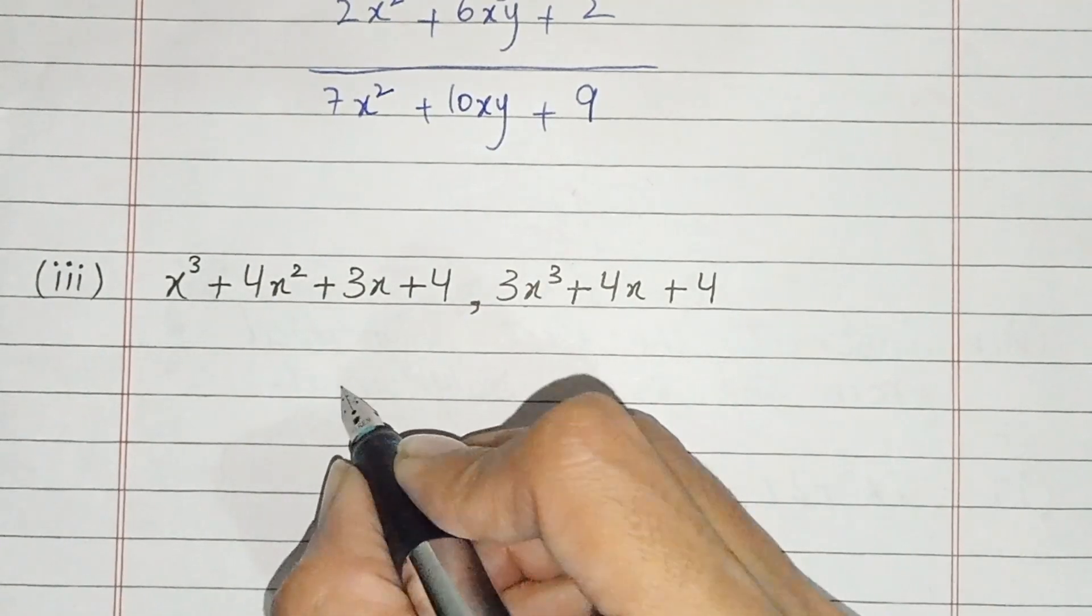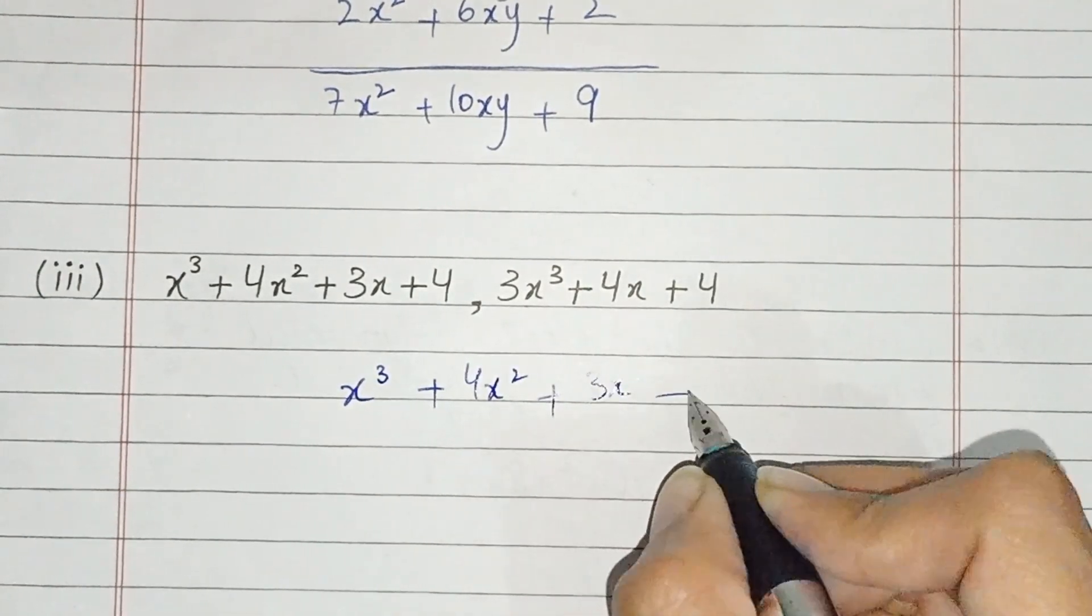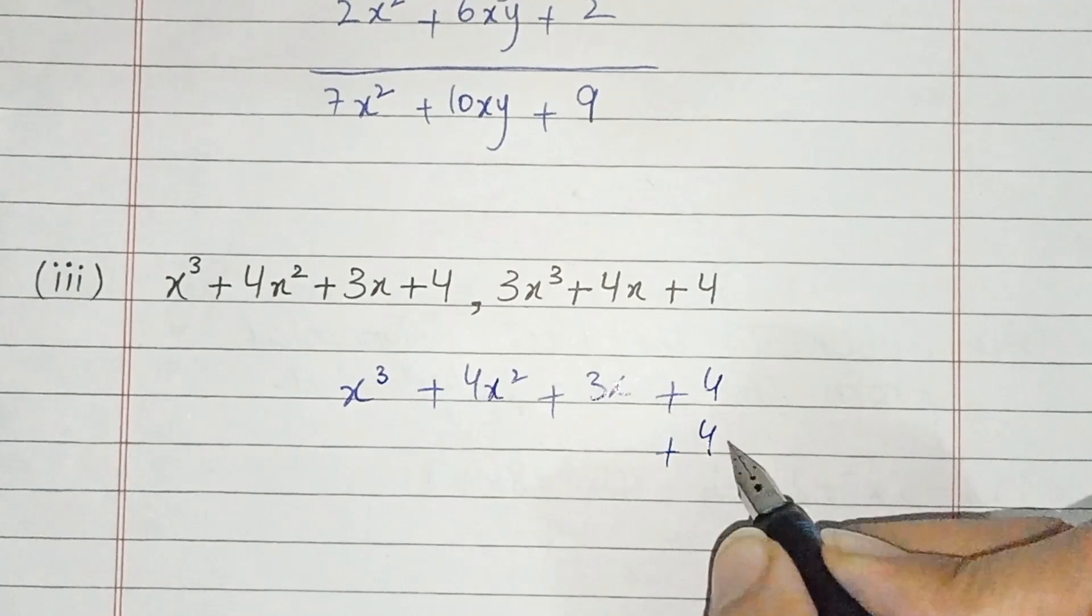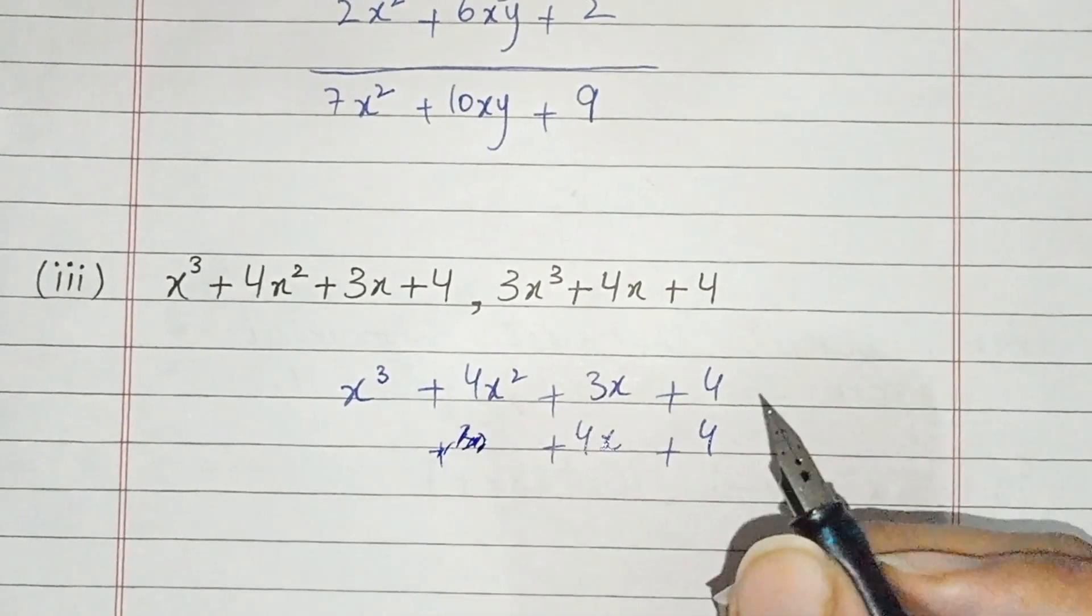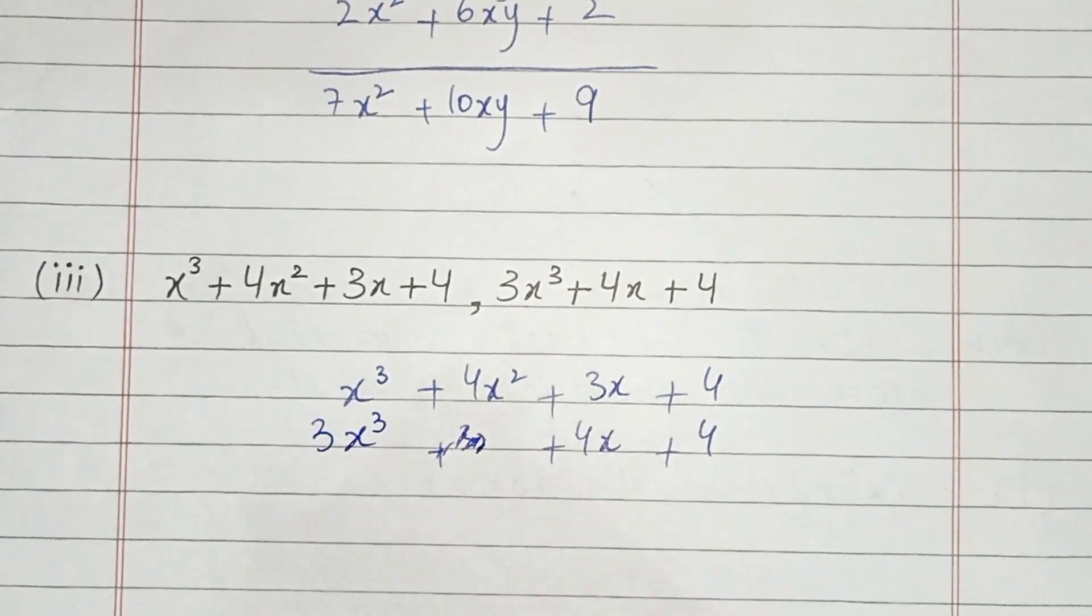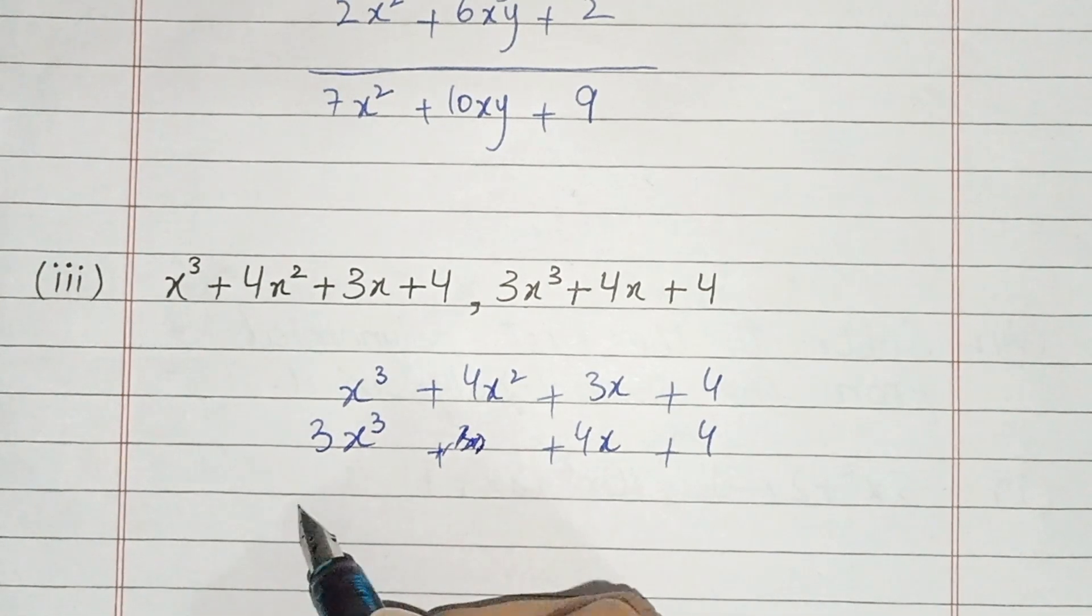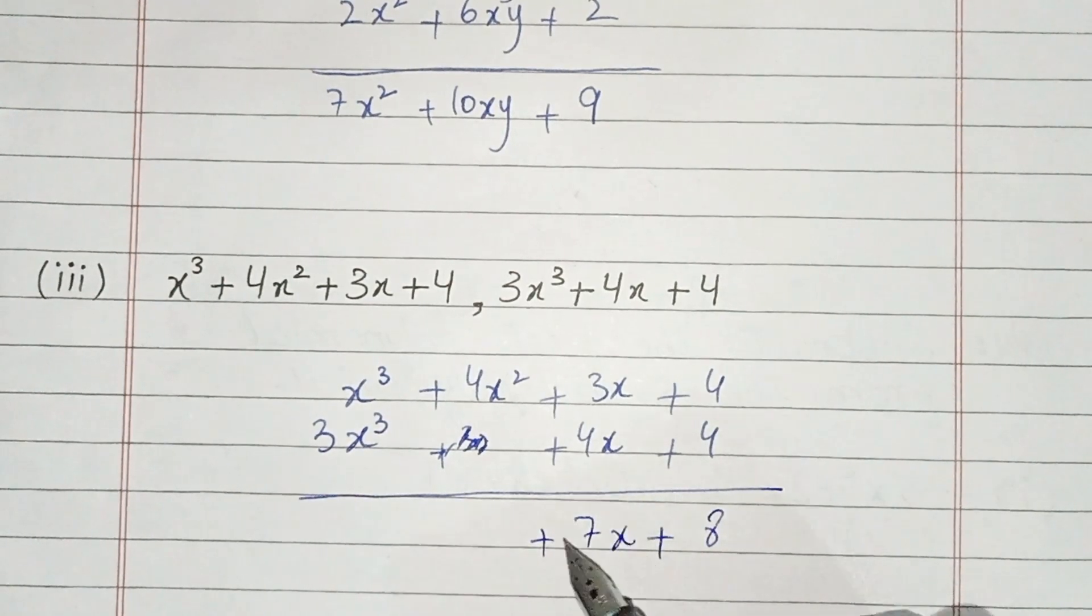Now since third part, we have x cube plus 4x square plus 3x plus 4. Write it down, plus 4x cube. Like terms we write down. 1 plus 4 is 5, so 5x cube. 4 plus 3 is 7, so 7x. 4x square and this is 4x cube. And this is the answer of third part.